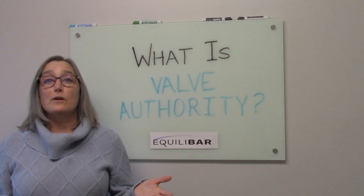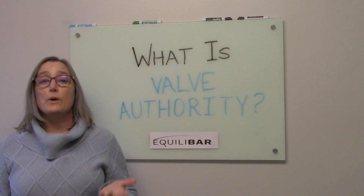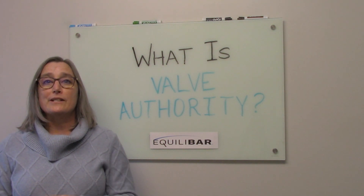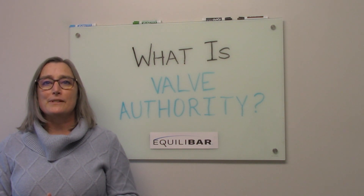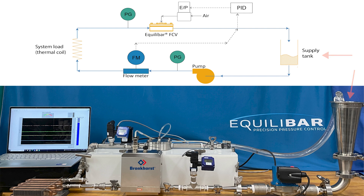Theory is great, but let's take a look at the Equilibar control valve controlling through a wide operating window with valve authority down below 5 percent. In our setup, a centrifugal water pump capable of about 10 psi output, typical of hydronic systems, pumps water from a supply tank through the system. As the flow increases, the output pressure decays as predicted by a classic pump curve.